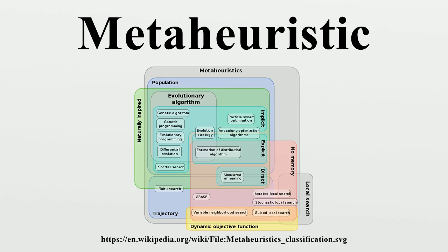Properties: These are properties that characterize most meta-heuristics. Meta-heuristics are strategies that guide the search process. The goal is to efficiently explore the search space in order to find near-optimal solutions. Techniques which constitute meta-heuristic algorithms range from simple local search procedures to complex learning processes. Meta-heuristic algorithms are approximate and usually non-deterministic. Meta-heuristics are not problem-specific.